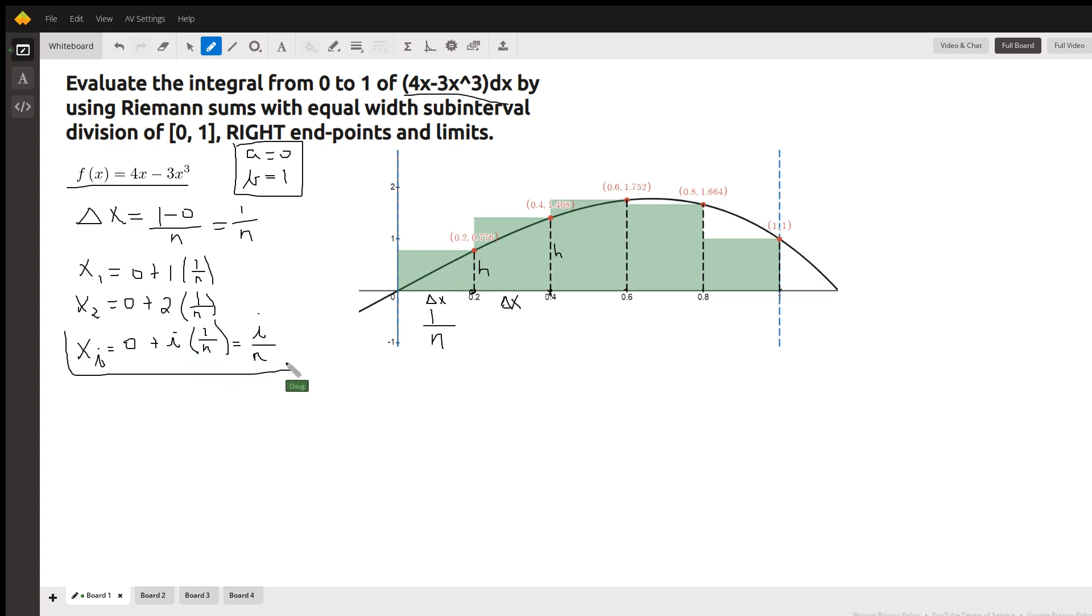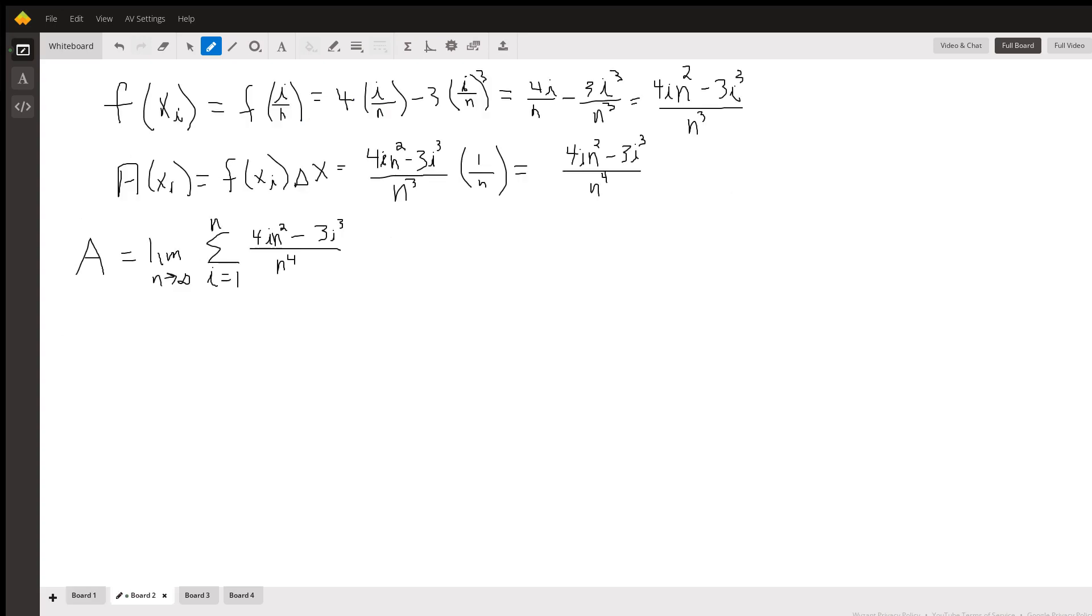The i-th right-hand endpoint is i times one over n. Now we want to calculate the area, so f of x_i, that's like the h that I referred to in the previous diagram, is f of i over n. i over n is the right-hand endpoint, and if I plug that value into the function, this is what I get.